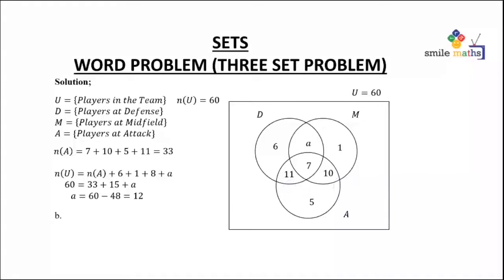Now for the number of players that play midfield, it's now clear. We have 10 plus 7, then we have 1, then we have the a that we just found which is 12. And adding all these, you are getting 30.